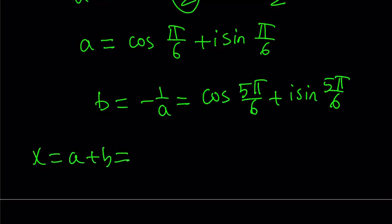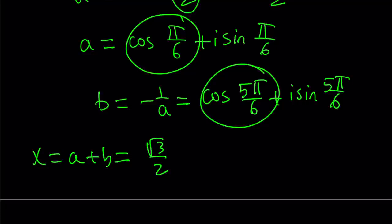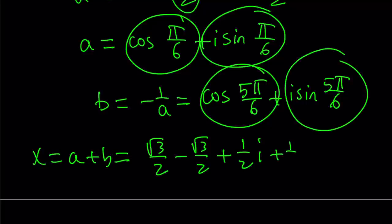Now x is going to be a plus b. If you add these values, you're going to get the following: this is going to be like √3/2 minus √3/2, and now you're going to add these two values, that's like one half of i and this is also going to be one half of i. Sine is positive in first and second quadrants, but cosine is negative in the second quadrant, so they cancel out, and we end up with x equals i.